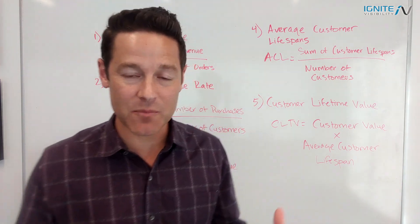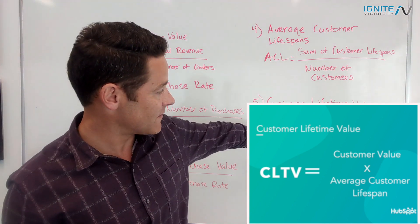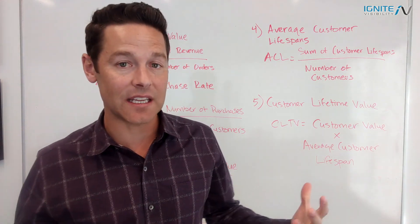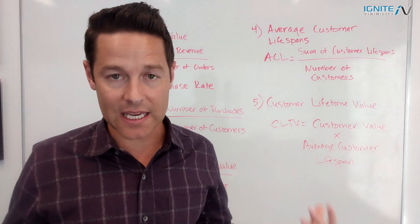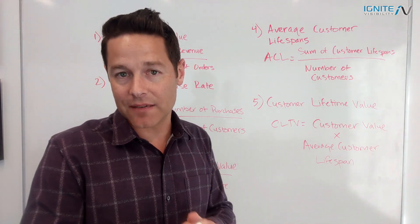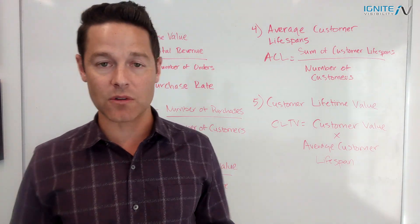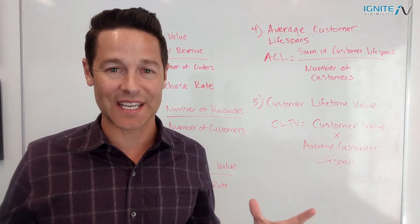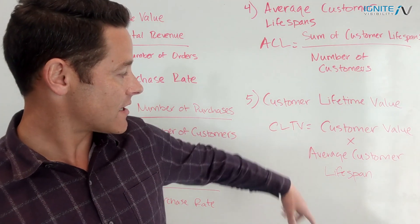Item number five — the most important one for many people — is customer lifetime value. The customer lifetime value calculation is: customer value times the average customer lifespan. That gives you how much every single customer is worth. People often back that out by subtracting costs from that customer value to understand the net income level within any individual business model. In its most basic form, customer lifetime value equals customer value times average customer lifespan.